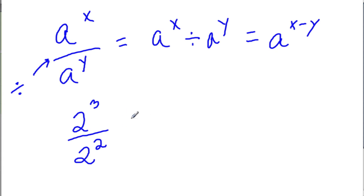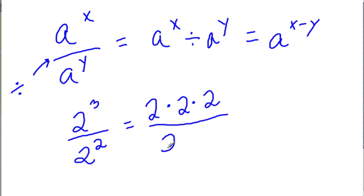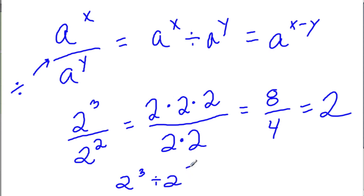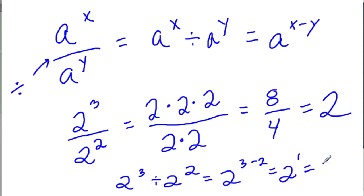Without this law, you might write 2 times 2 times 2 in the numerator — that's 2 to the third — and 2 times 2 in the denominator. 2 times 2 times 2 is 8, and 2 times 2 is 4, so the answer is 2. Using this law, we see it sooner: 2 to the third divided by 2 to the second — subtract the exponents, keep the base. 3 minus 2 is 1, so 2 to the first power is 2, which matches. This law works.